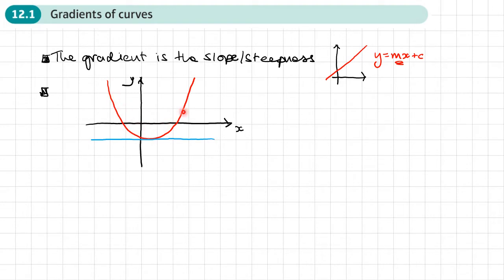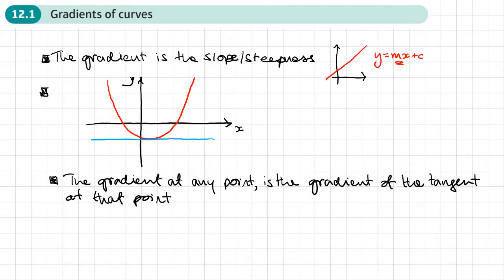If I want to find a gradient at any point, I need to find a tangent - in other words, a line that touches the curve at any point. If I find the steepness of that line, the gradient of that line, that gives me the gradient at that particular point.